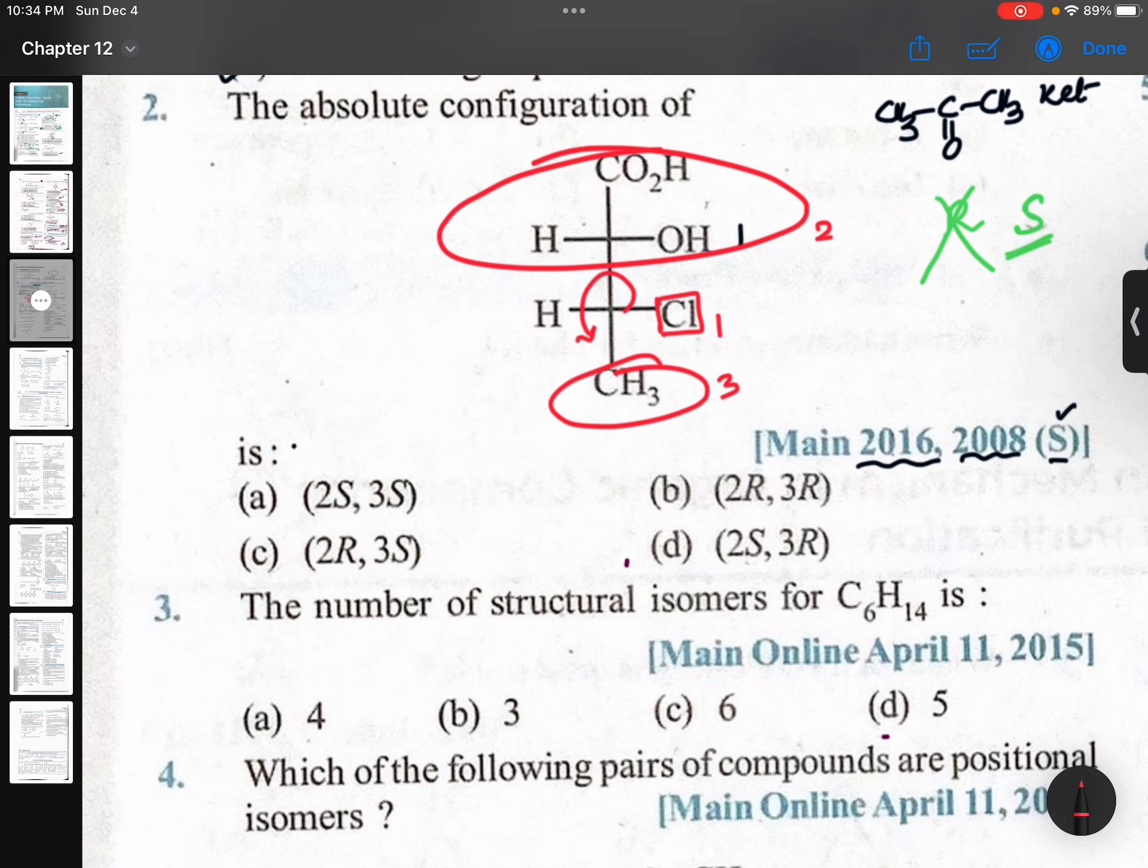Right, traveling anticlockwise. Anticlockwise means it should be S, but least priority group is on the horizontal line so it will become R. That means the answer is 2S, 3R.